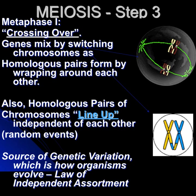The source of genetic variation is how organisms evolve. It's the law of independent assortment — whether the yellow chromosome goes left or right to the gamete is a 50-50 chance.